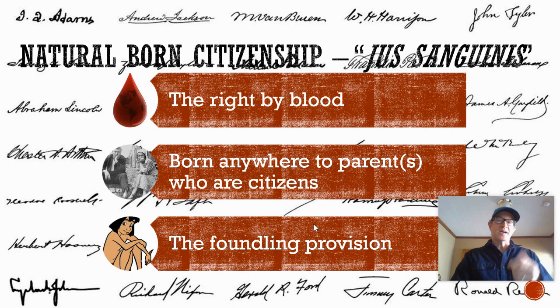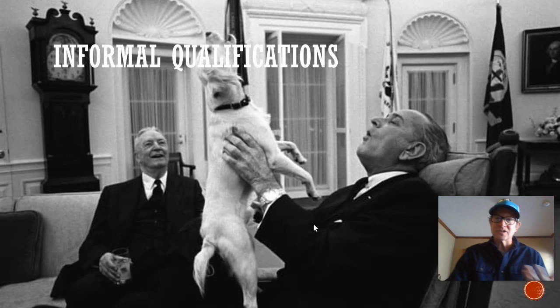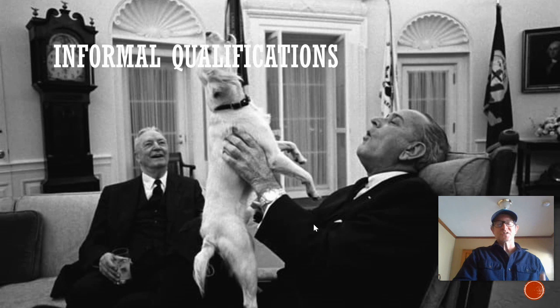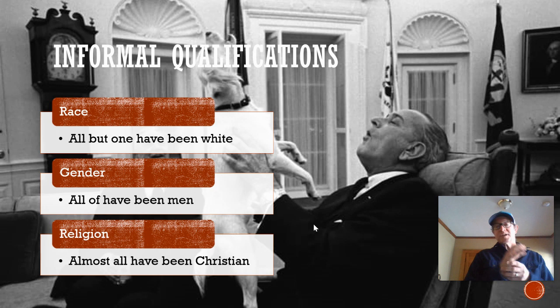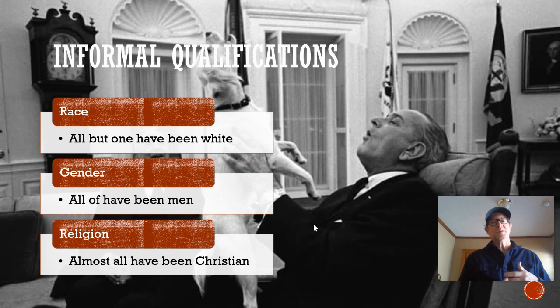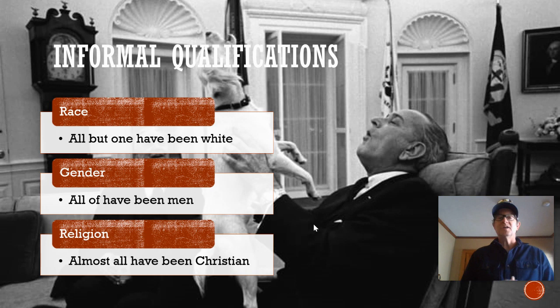Natural born citizenship is determined either by soil or by blood. Moving on to informal qualifications — none of these are constitutional, they're just traditional qualifications that the electorate likes to see. Some of these barriers are changing. One is race: all but one president has been white — that barrier was broken with Barack Obama. Regarding gender, all presidents have still been men, though Hillary Clinton was the first woman nominated by a major political party for president, and she received more votes than Donald Trump.